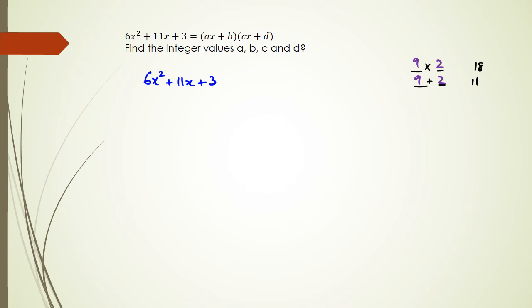So that means what I'm going to do is I'm going to split up that 11x as 9x and 2x. Then the next part is I'm going to split them up into two parts and factorize the left hand side and the right hand side. On the left hand side I can see that 3x is a common factor.